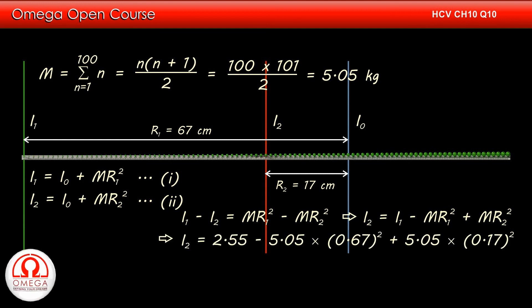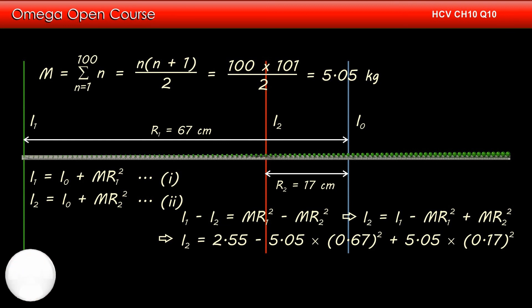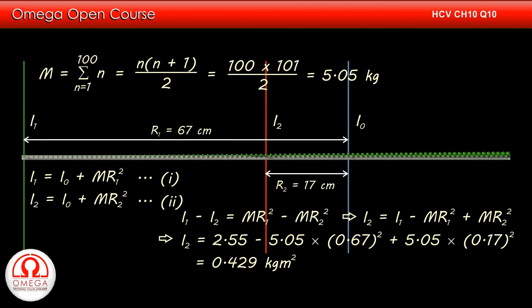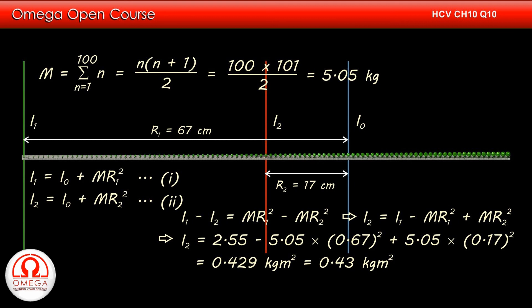Putting the values, we get I2 = 2.55 − 5.05 × (0.67)² + 5.05 × (0.17)². Simplifying, we get I2 = 0.429 kg meter square, which when rounded to two significant figures gives 0.43 kg meter square. This is our answer.